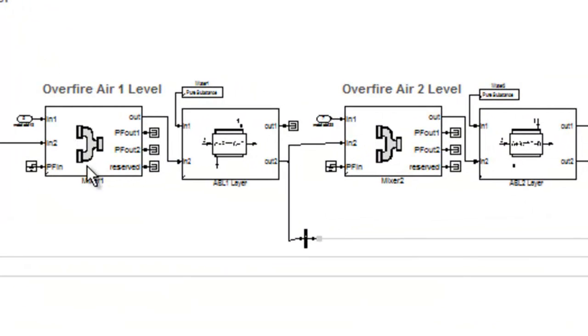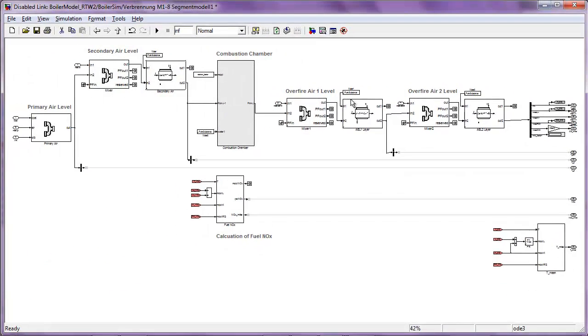What we have here is water flow into the chemical reactor to simulate the cooling effect the pipes have. The overfire air levels one and two are modeled very similarly to the secondary air level. Air is mixed from the dampers and combustion takes place in the reactor. Water flow simulates the cooling effect from the water pipes. Now let's have a quick look inside the combustion chamber itself.